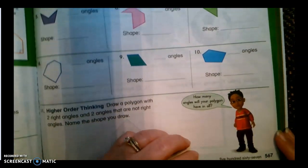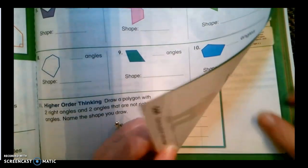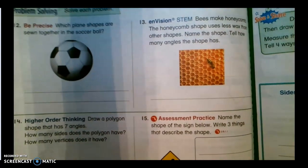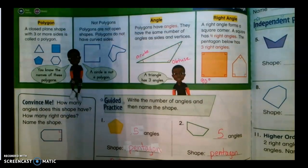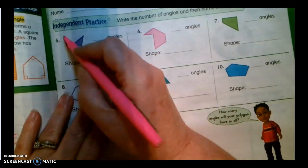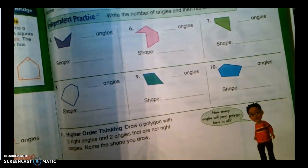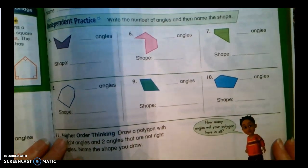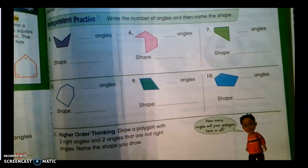All right guys, your task today, you're going to complete page 567 and 568 in your textbook. All you have to do is count the number of angles. And if you've noticed something, the number of angles has always matched the number of edges.